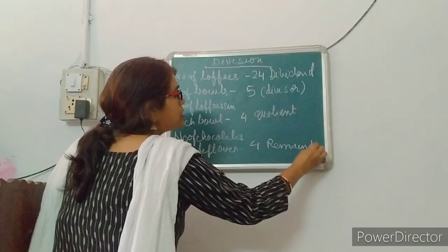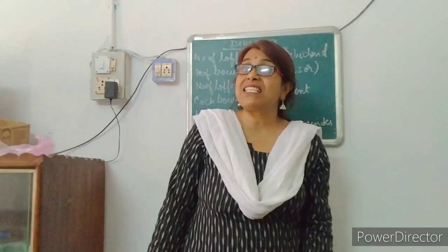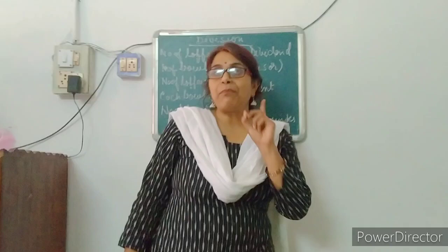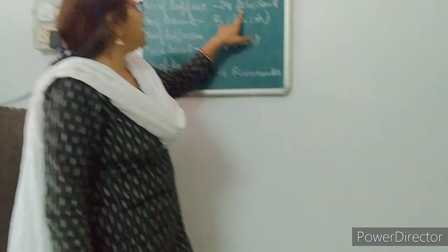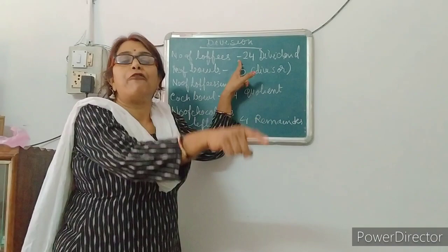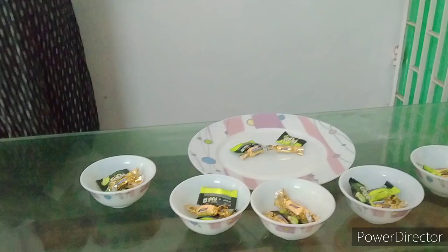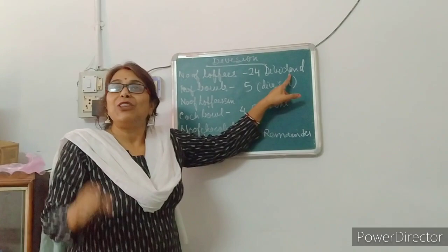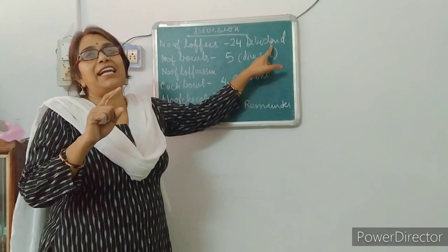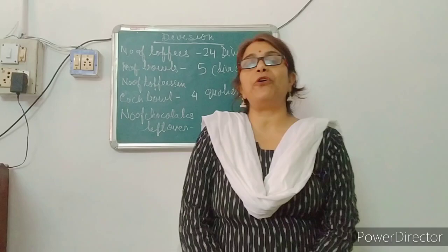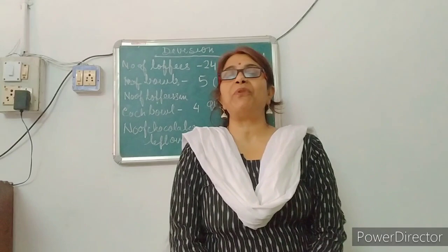Dear children, division means equal sharing or equal distribution of the number. The number to be divided is called dividend. Here, we are distributing 24 chocolates in 5 bowls. This 24 is called dividend. So, what is dividend? Dividend is the number to be divided.